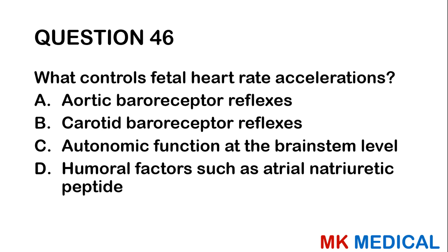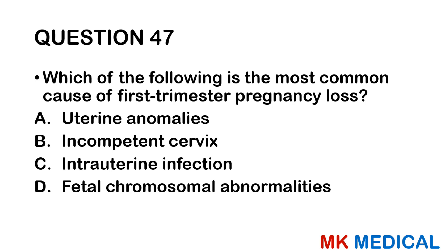Question forty-six: What controls fetal heart rate accelerations? A, aortic baroreceptor reflex; B, carotid baroreceptor reflexes; C, autonomic functions at the brainstem level; D, humoral factors such as atrial natriuretic peptide. Most likely this is due to autonomic function of the brainstem — parasympathetic or sympathetic output. When the uterus contracts and the head is compressed, parasympathetic outflow increases, reducing heart rate causing decelerations. When this abates, sympathetic output increases the heart rate causing accelerations.